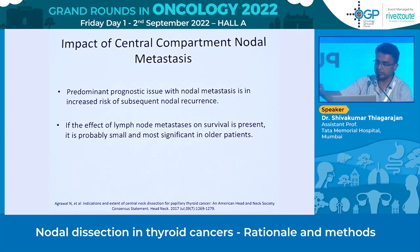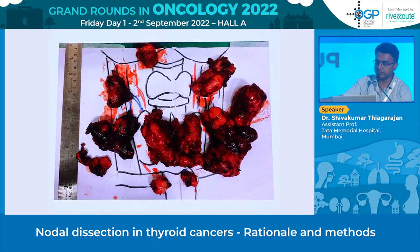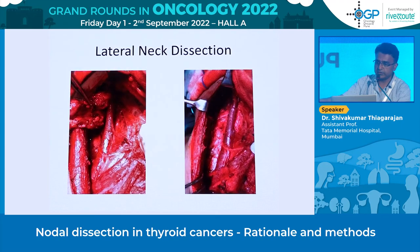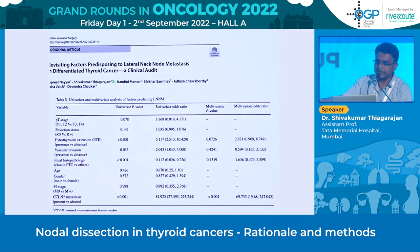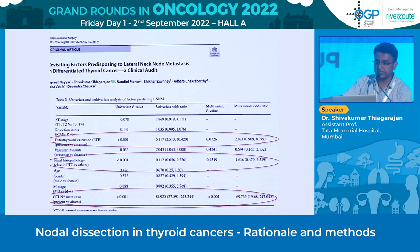Lymph nodes in thyroid cancer do not significantly impact survival but do lead to recurrence, adding to morbidity. A lateral neck dissection is needed when central compartment nodes are positive — levels 2 to 5 lateral compartment dissection should be performed. Our work showed an odds ratio of 81, meaning the chance of lateral compartment metastasis is highest when the central compartment is positive. Other predictive factors include extrathyroidal extension and high-grade histopathology.